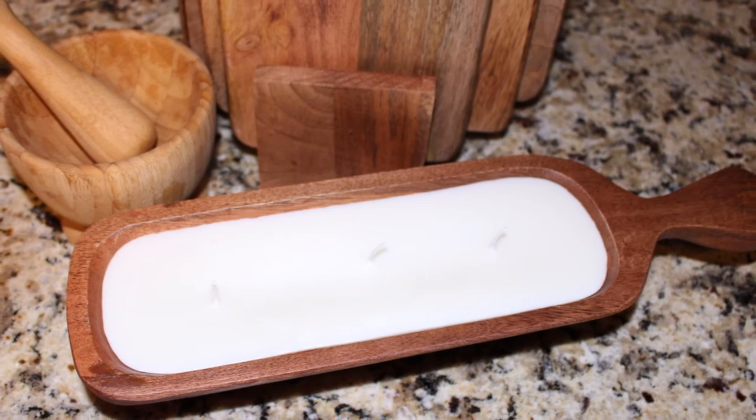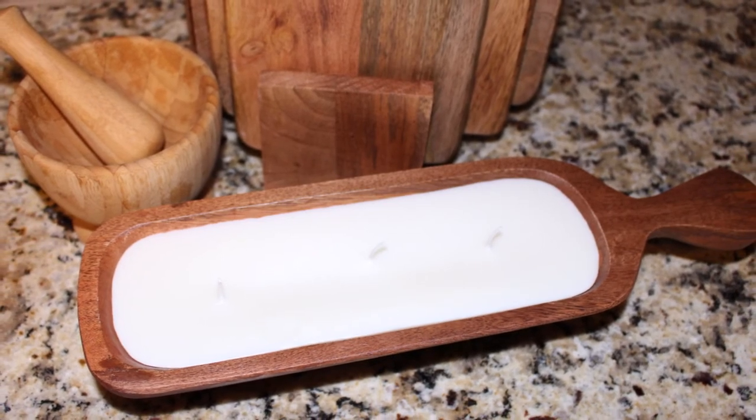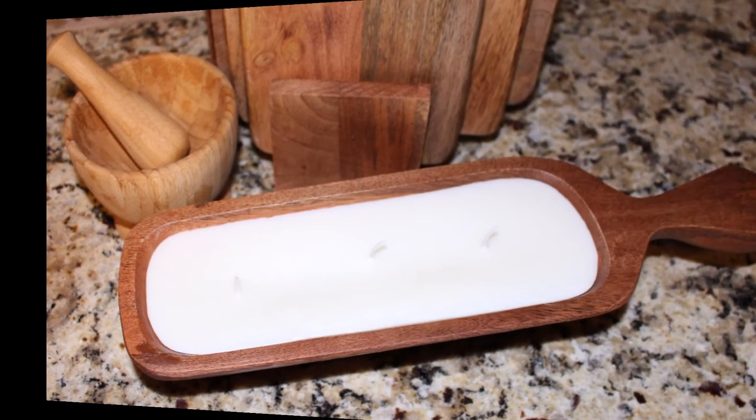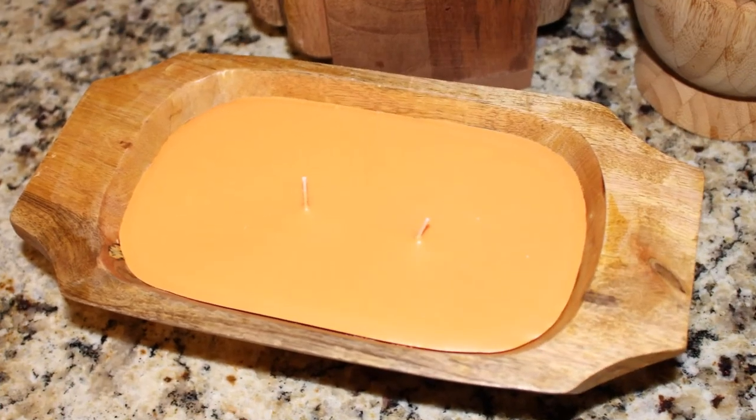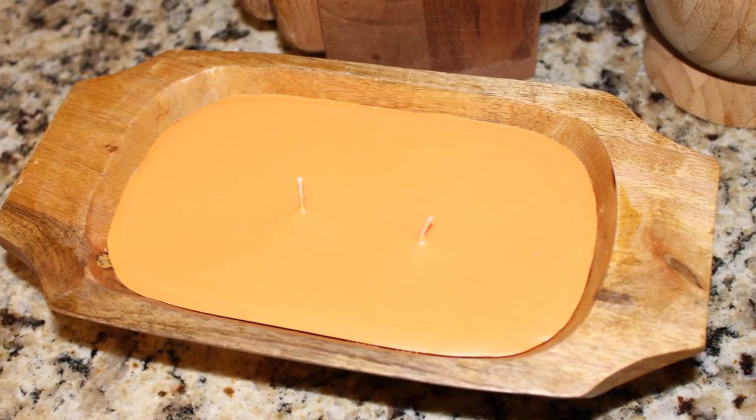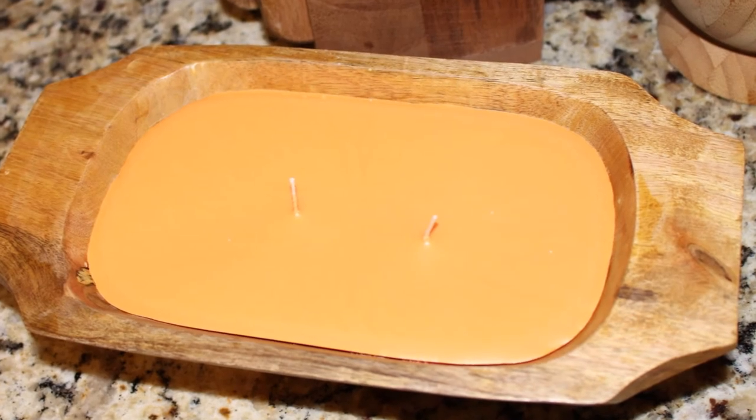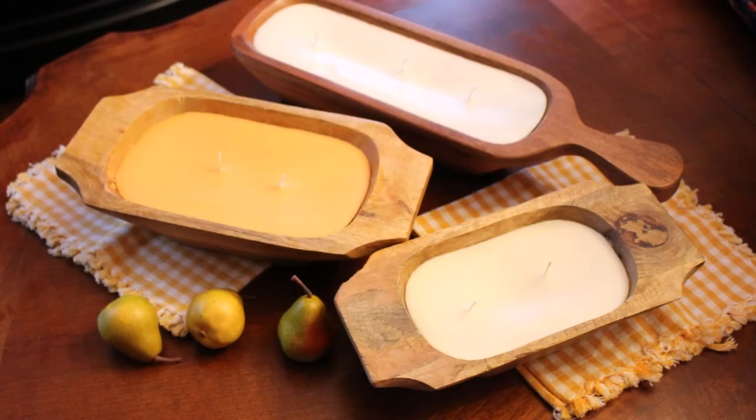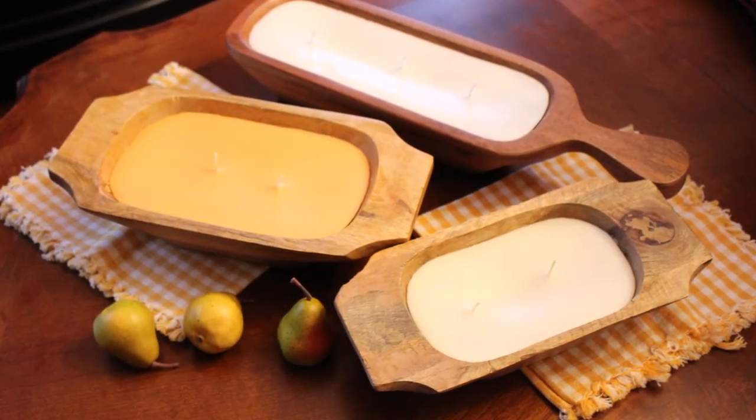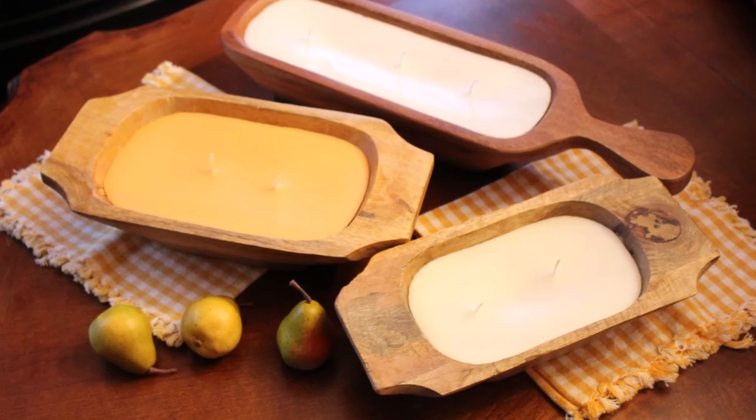And here is another handheld dough bowl or snack bowl. And then here it is with the melted recycled candle in it. I love this beautiful amber color. And here are all of them together. I love this DIY.